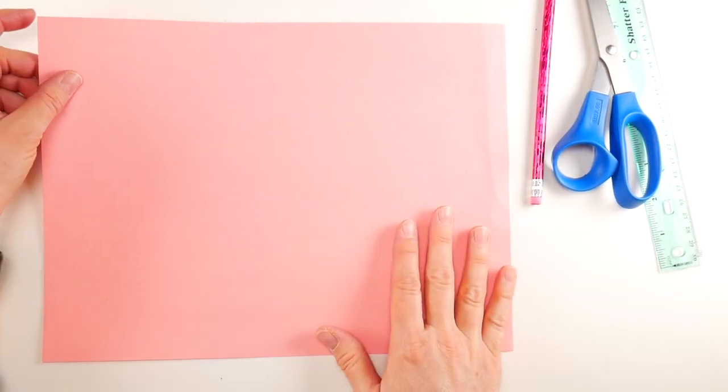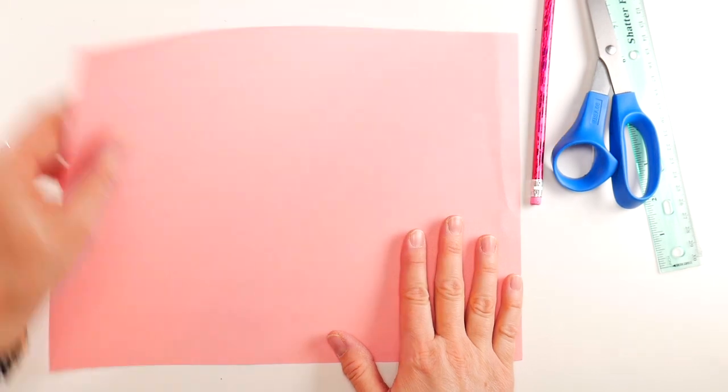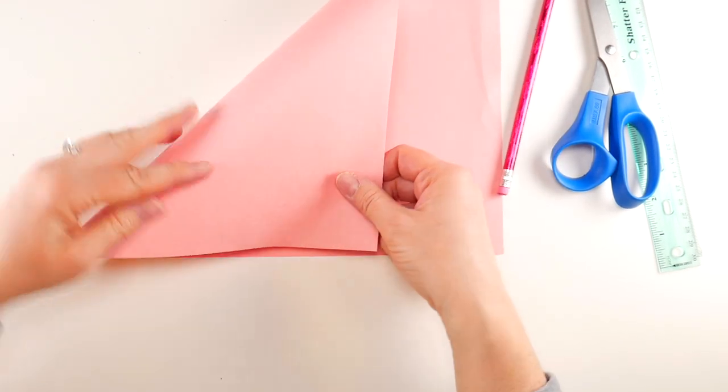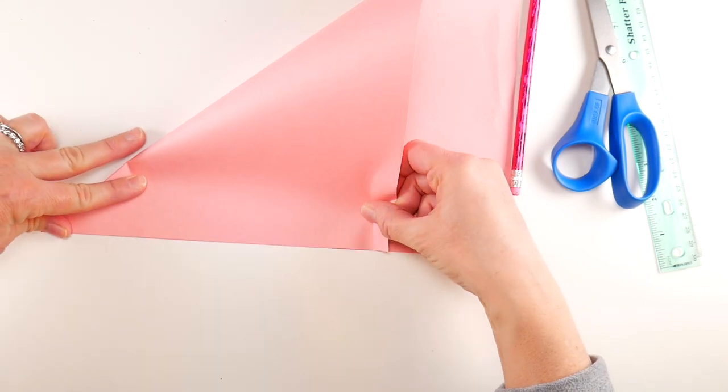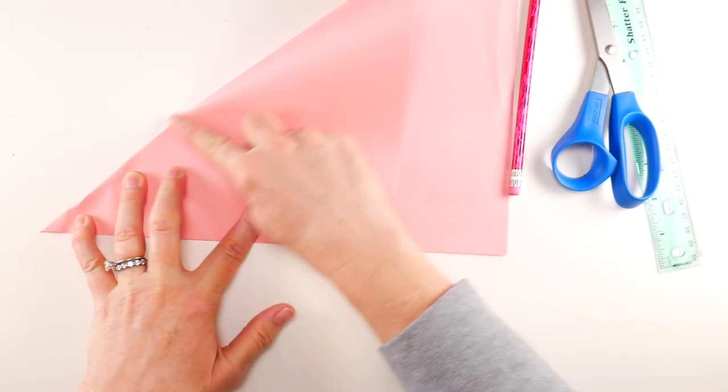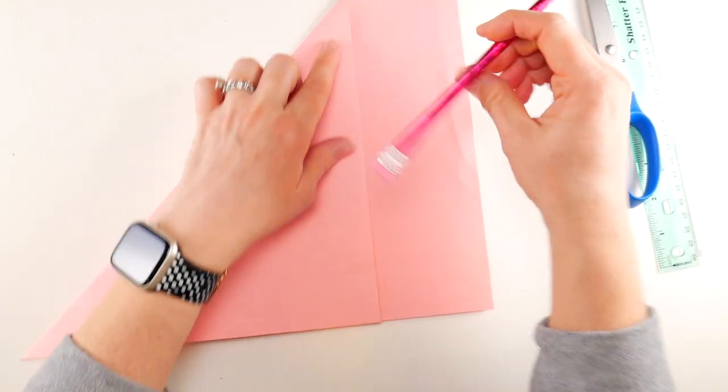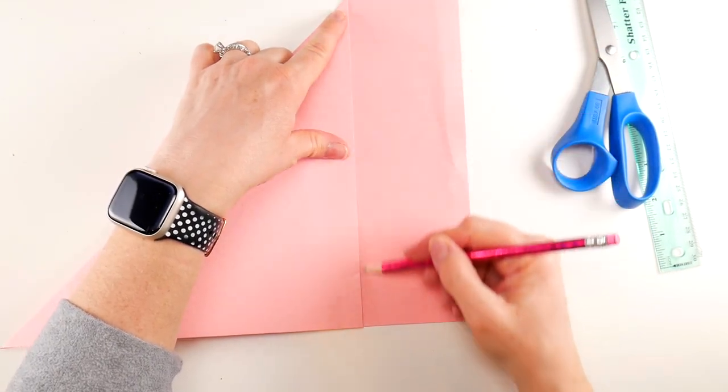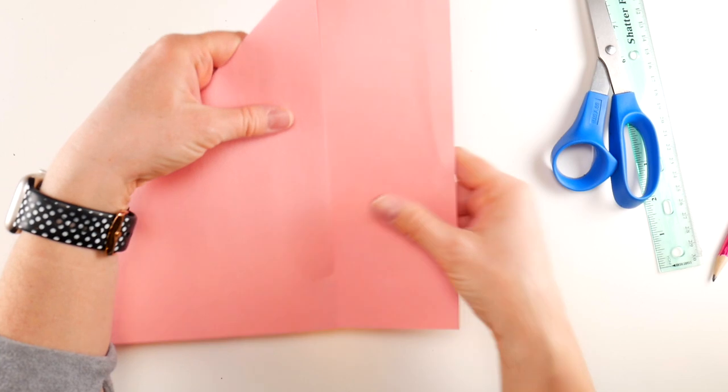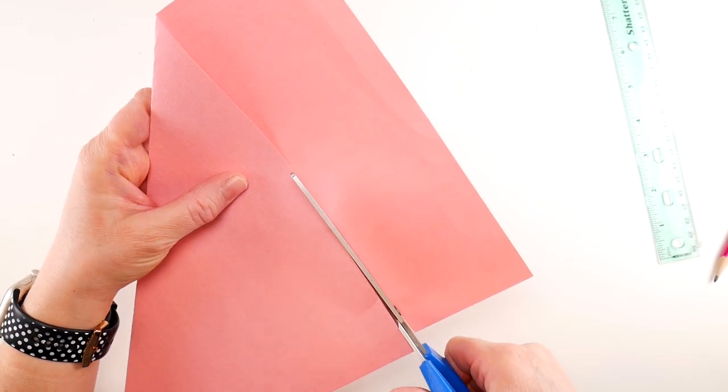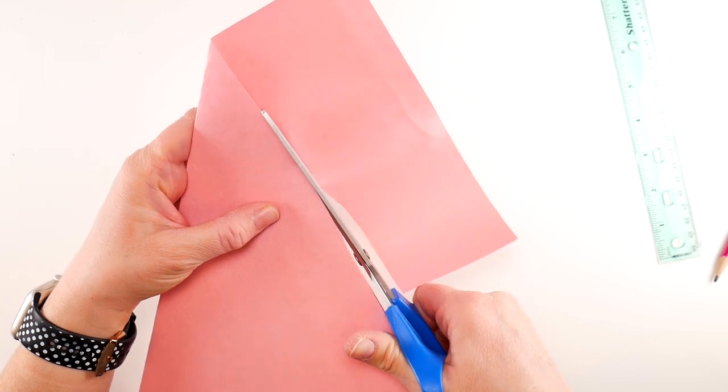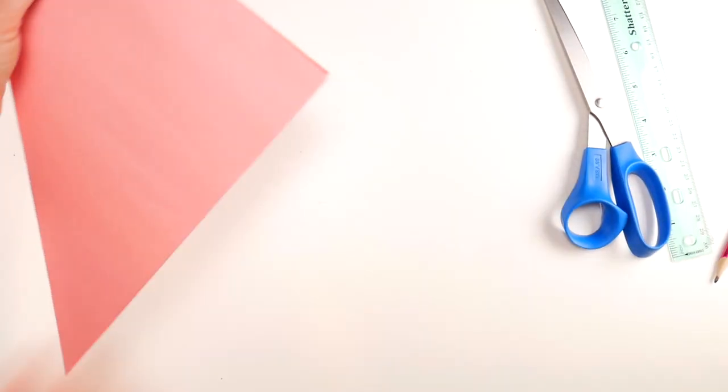A very easy way to do that is to take a corner and fold it down so that the bottom of your paper lines up perfectly along this bottom edge. Then you'll crease it and you can use your pencil to sketch a light line or just use the edge here as a guideline. Then take your scissors and cut along this edge and cut that strip off. Now you're left with a perfect square.